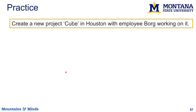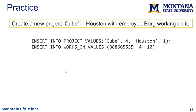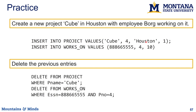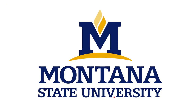Here's a practice problem: create a new project called Cube in Houston with employee Borg working on it. First you would INSERT into the project table, then INSERT into works_on to link Borg to that project. To delete, you'd DELETE FROM project WHERE pname = 'Cube' and DELETE FROM works_on WHERE ssn = Borg's SSN AND pno = 4. That's a whirlwind tour of SQL. I will use a little bit of SQL in your final exam — fairly simple stuff. You'll also have access to the employee table in SQLite so you can try queries before selecting your answers.